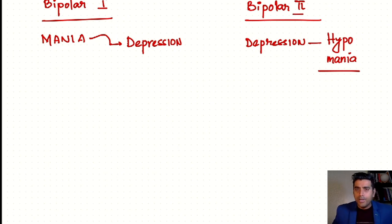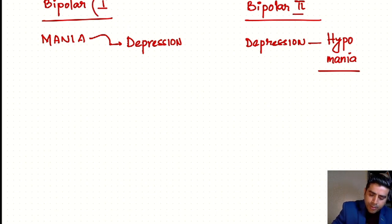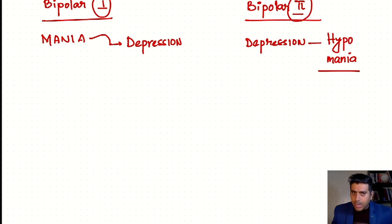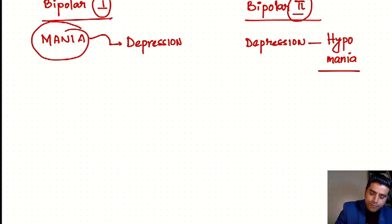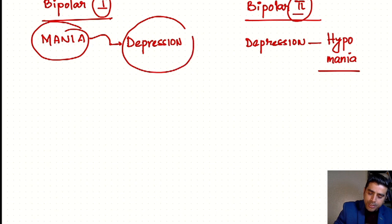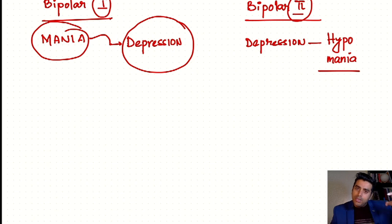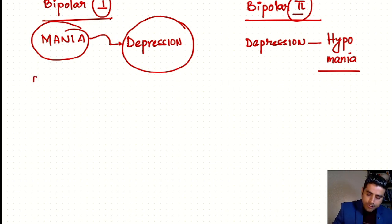Two important concepts about Bipolar Mood Disorder and Schizophrenia will be discussed. Bipolar Mood Disorder has two types: Type 1 and Type 2. In Bipolar Type 1, the patient will have a phase of typical mania, followed by a mixed phase of mania and depression, and then gradually develop depression. In Bipolar Type 1, you get both poles — the manic pole and the depression pole — and both are severe: severe mania and severe depression.